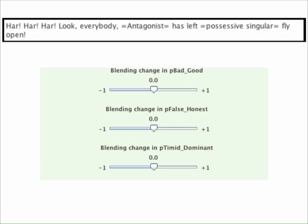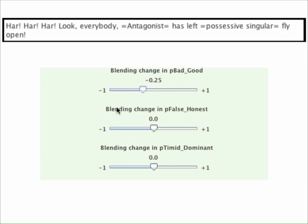Now this is a pretty nasty option so it's not going to endear the antagonist to the player. I figure that doing something mean like this will make the antagonist like the player a lot less, so I'm going to set a blending value of minus 0.25.